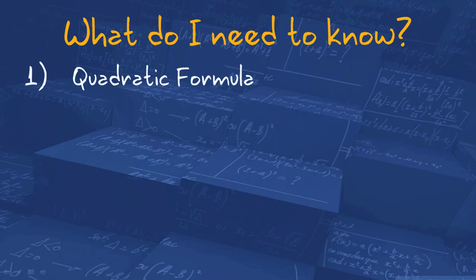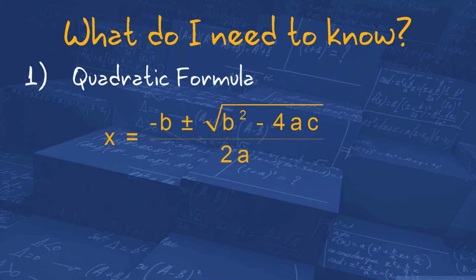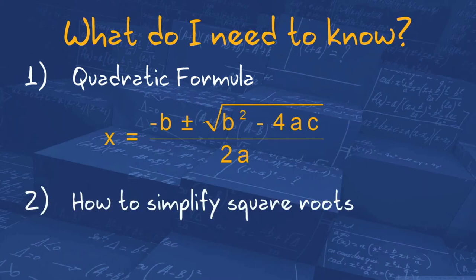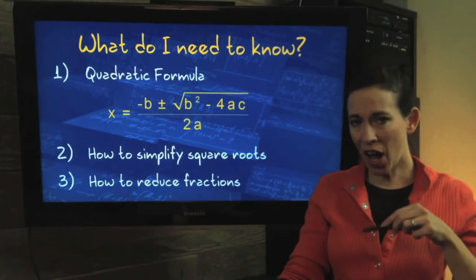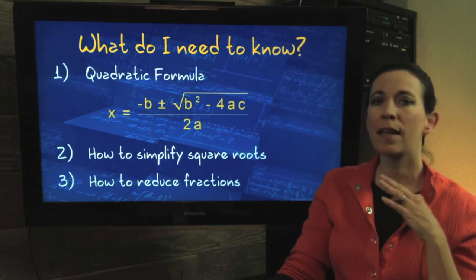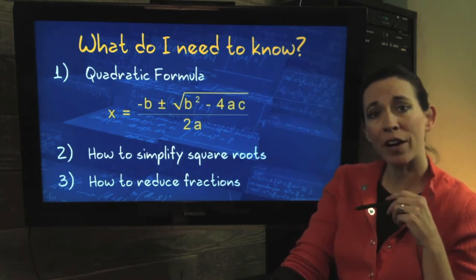Now, what do you need to know in order to solve using the quadratic formula? First of all, you need to know the quadratic formula. So x equals the opposite of b plus or minus the square root of b squared minus 4ac all over 2a. We also need to know how to simplify square roots and how to reduce fractions. If you've got all of these in your toolbox, then you'll be able to solve using the quadratic formula.